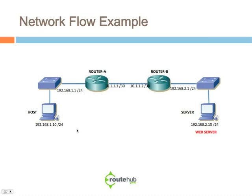In this particular example, we have three particular subnets. We have Host A, which is on the subnet 192.168.1.0, and the host ID for this is .10. On the other end, we have another segment on 192.168.2.0. Here we have a server on 2.10, and we're going to say that this is a web server — like when you go to yahoo.com or google.com, basically you're accessing a web server.